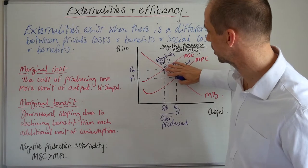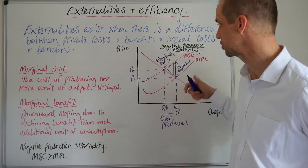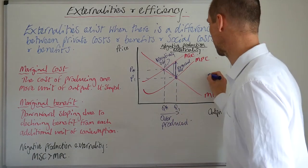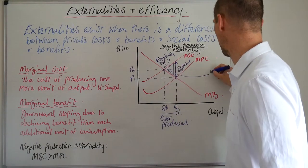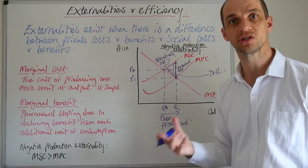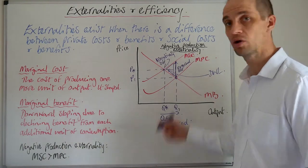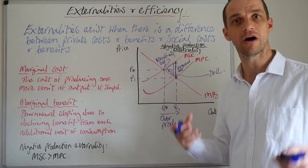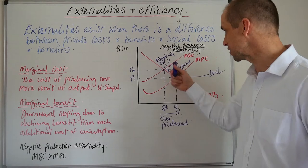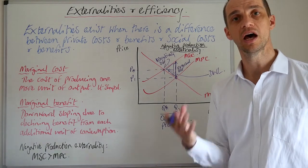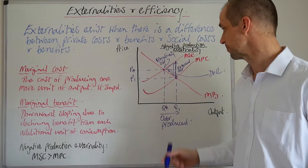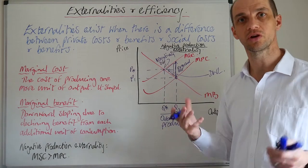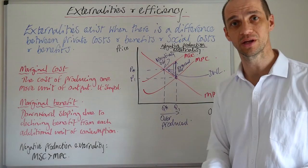And then when we go back to our social optimum P star and Q star, we can see that we have that area of deadweight economic loss. That is a loss of societal output because it means that we are now facing a situation of pollution. There's external costs that are imposed upon society. And this is not good news. We want to restrict economic output to this level. The question is next, how do you actually go about doing that?